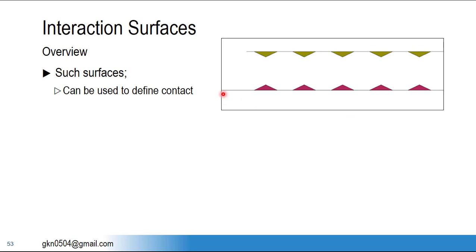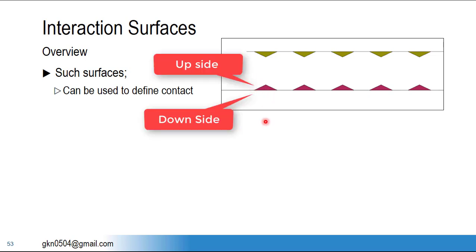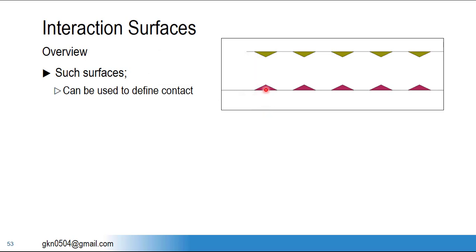Here we have two components — the first and the second — which may be surface or solid. The symbols shown are just representations of contact surfaces; we don't have such symbols in Abacus. An important property is that contact surfaces have a directional property: you define contact either on the upper surface, the downward surface, or sometimes in both directions.